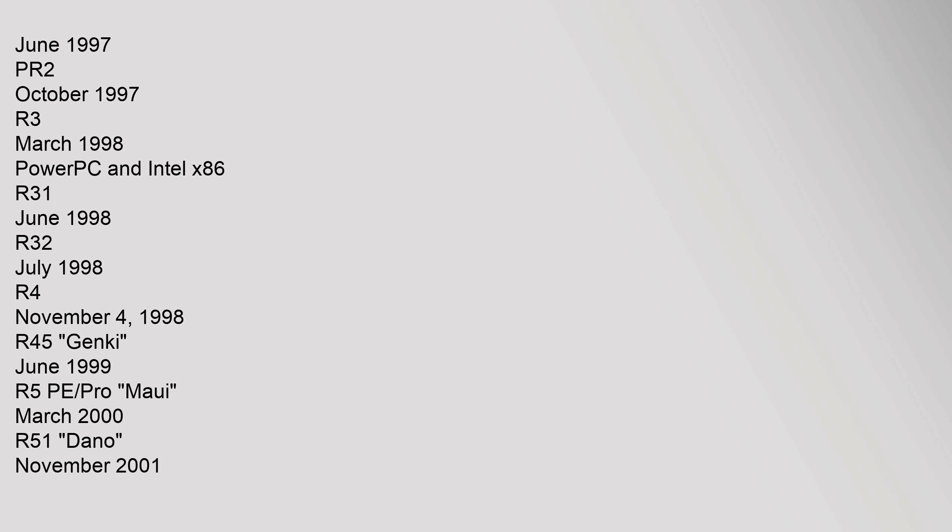Version history: DR1–DR5, October 1995 to June 1997; PR2, October 1997; R3, March 1998 (PowerPC and Intel x86); R3.1, June 1998; R3.2, July 1998; R4, November 4, 1998; R4.5 Genki, June 1999; R5 PE/Pro, March 2000; R5.1 Dono, November 2001 (Intel x86).